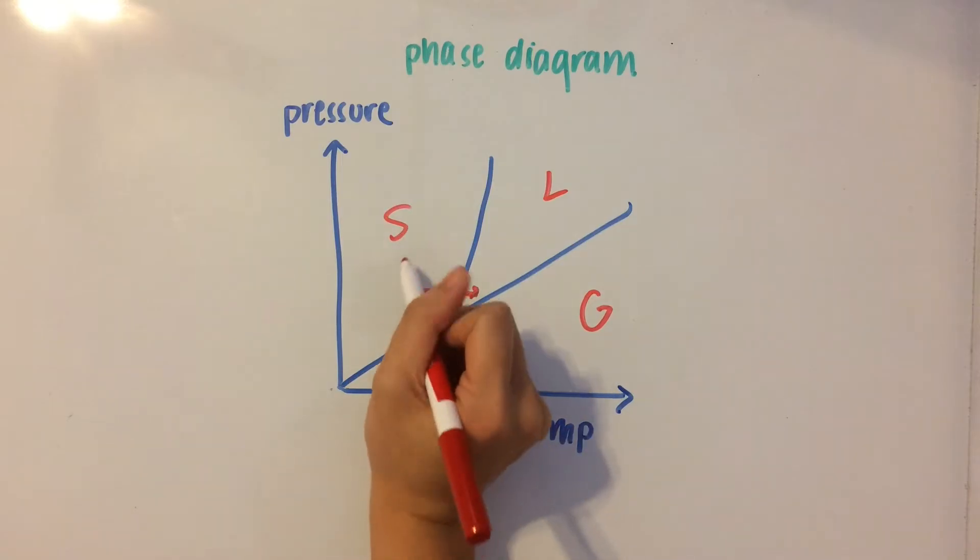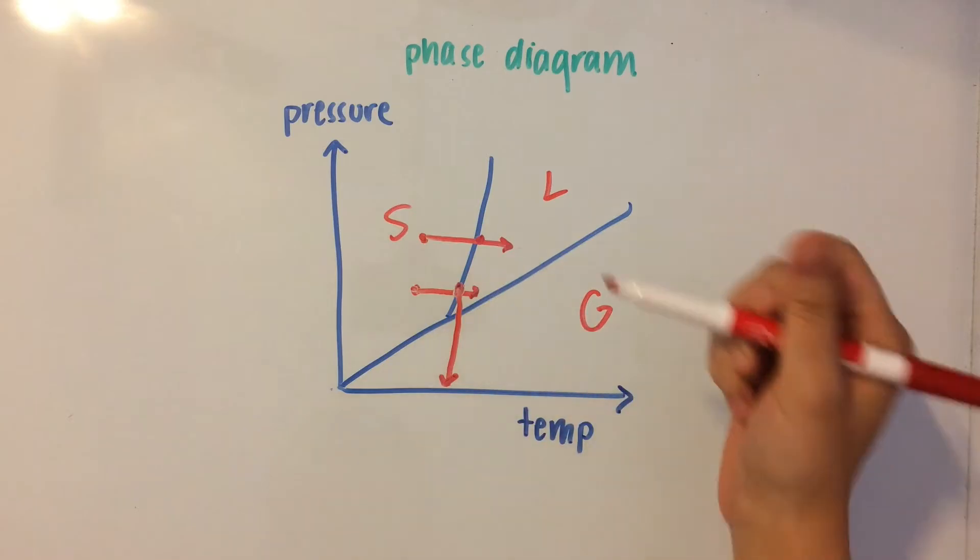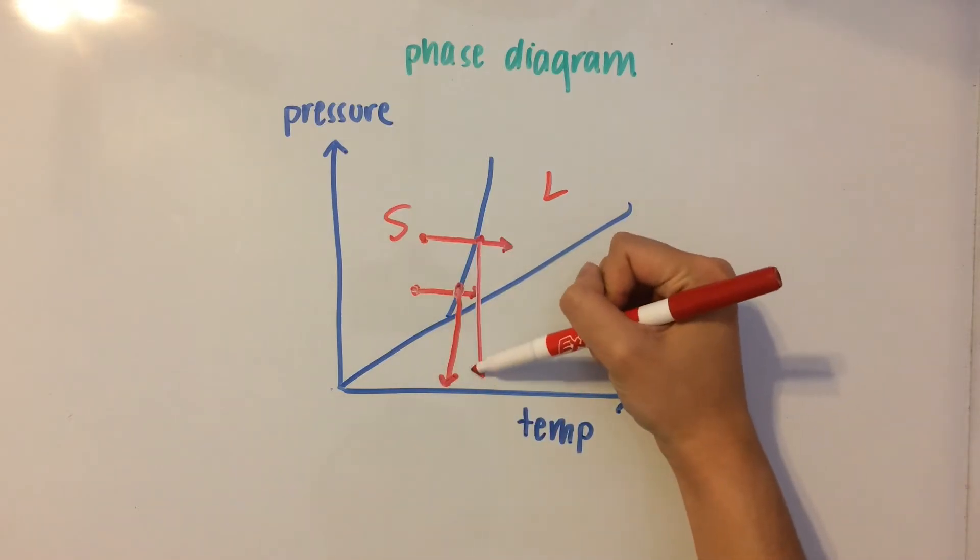But if we had a higher pressure, like here, and you move over to the liquid, the melting point would be a little bit higher.